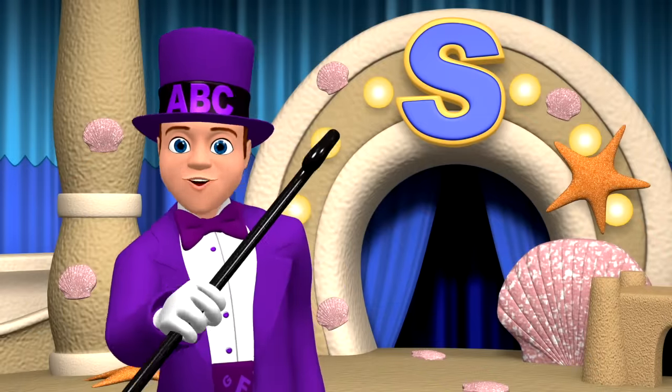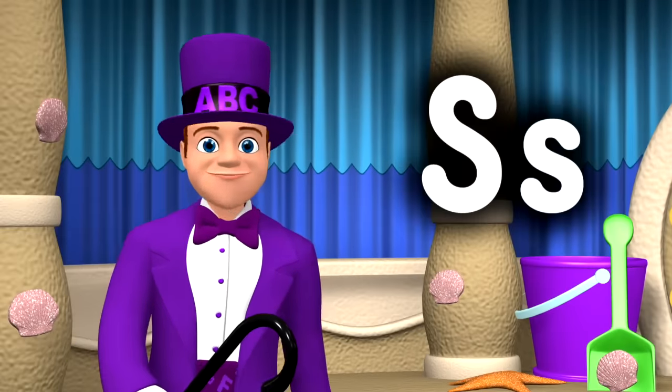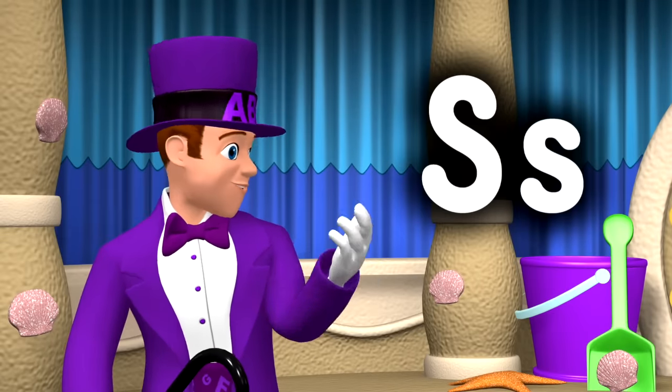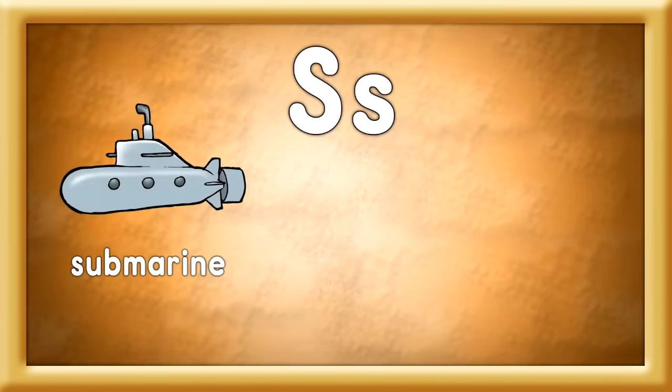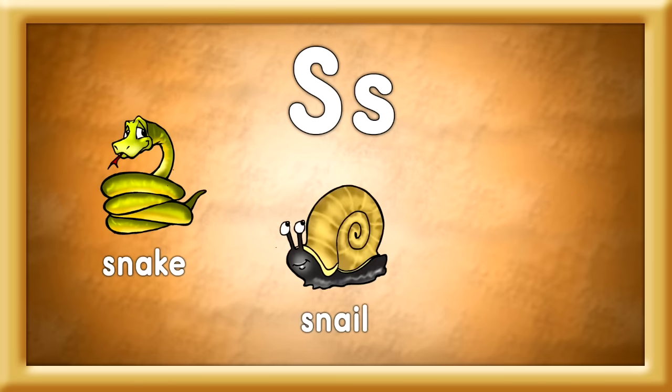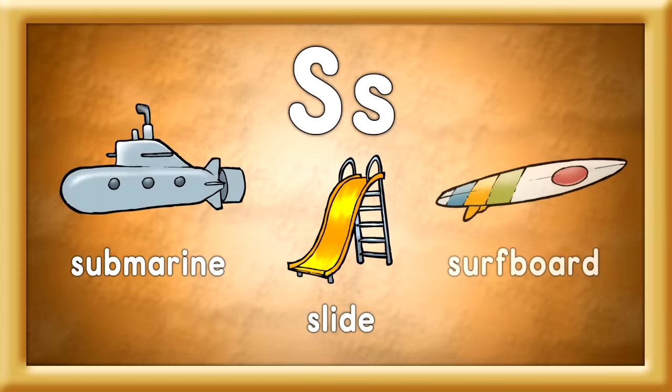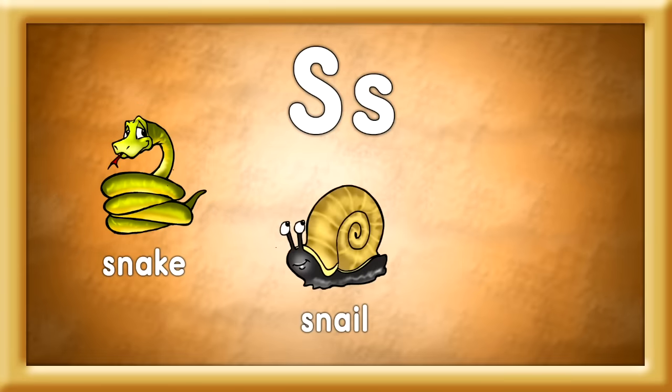Super duper! There's a capital S and a lowercase s. Sing these S words loud and clear, so people hear them far and near. Submarine, slide, and surfboard. A snake, a snail, and a sword. These are S words you can see — we learn letters easily. Submarine, slide, and surfboard. A snake, a snail, and a sword.